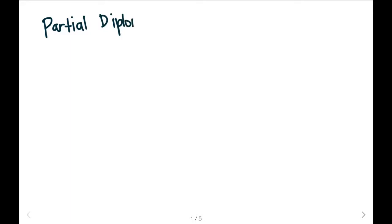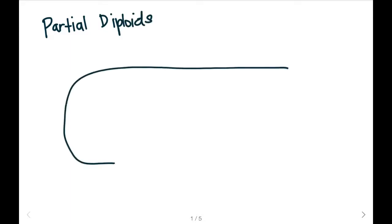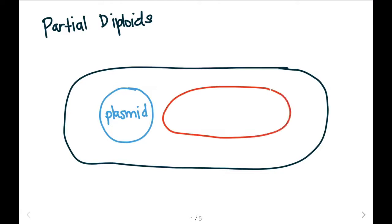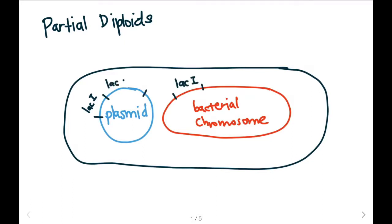Let's talk about partial diploids. This is important because sometimes we can have a bacterial cell that has two molecules of DNA. So if this is our bacterial cell, we might have DNA from a plasmid which was inserted into the bacterial cell through recombinant technology, and we'll also have DNA from the bacteria's genome or bacterial chromosome. Both of these molecules of DNA might consist of the lacI gene and might also both have the lac operon. This kind of cell that has two copies of the lacI gene and two copies of the lac operon will be called a partial diploid.